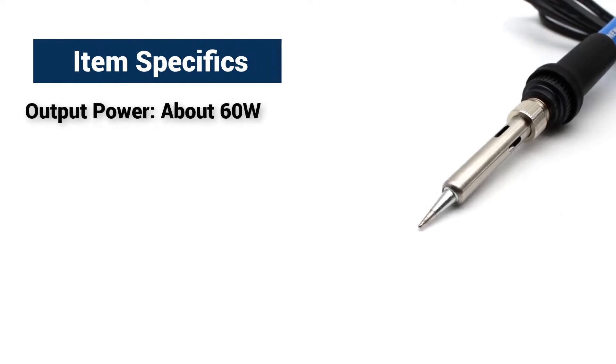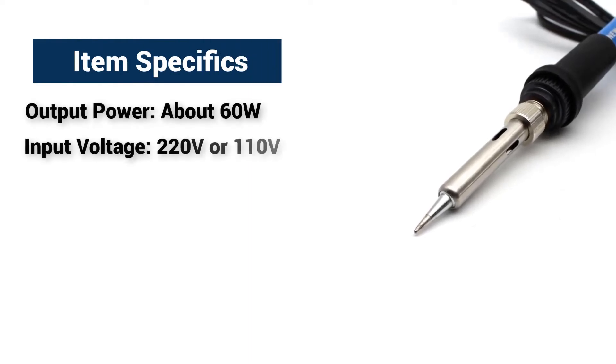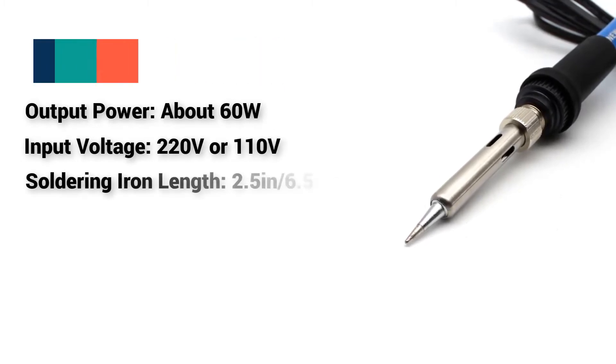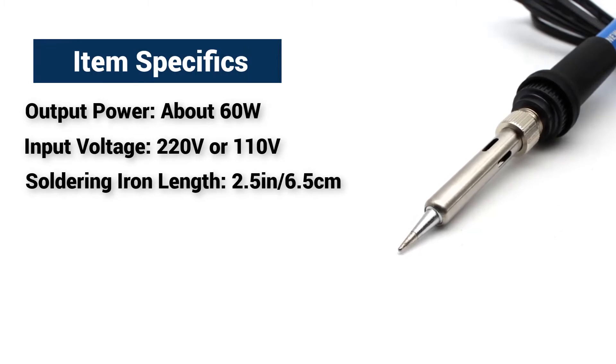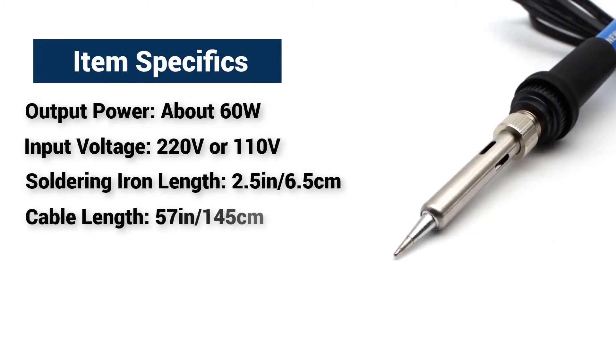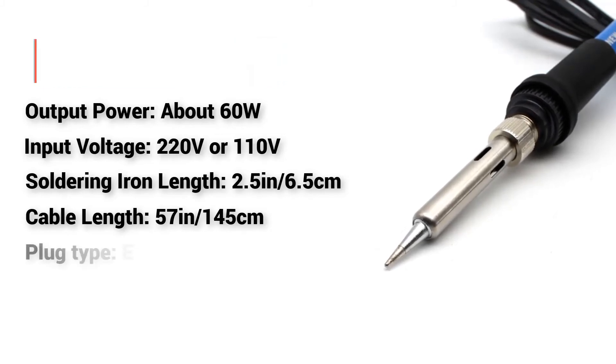Item Specifics: Output power about 60W, Input voltage 220V or 110V, Soldering iron length 2.5 inches or 6.5 cm, Cable length 57 inches or 145 cm.